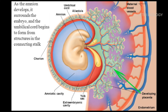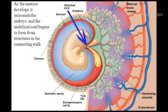The placenta is a temporary endocrine organ formed during pregnancy. It connects the fetus to the uterine wall through the umbilical cord. It is the organ by which the functions of nutrition, respiration, and excretion of the fetus are fulfilled.